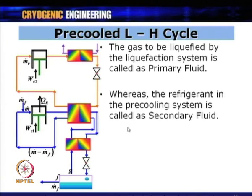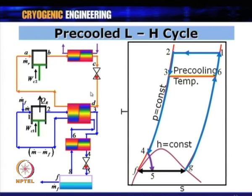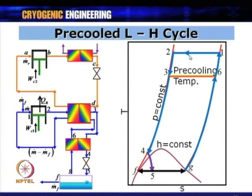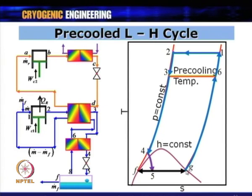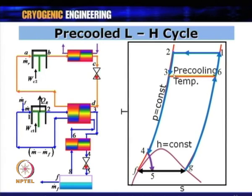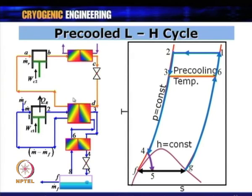On the T-S chart for the pre-cooled Linde-Hampson cycle: process 1→2 is compression, 2→3 is pre-cooling in the three-fluid heat exchanger to the pre-cooling temperature, 3→4 is further cooling in the main heat exchanger, followed by isenthalpic expansion. The return gas goes from G up to point 6, then warms to point 1 in the pre-cooling heat exchanger.